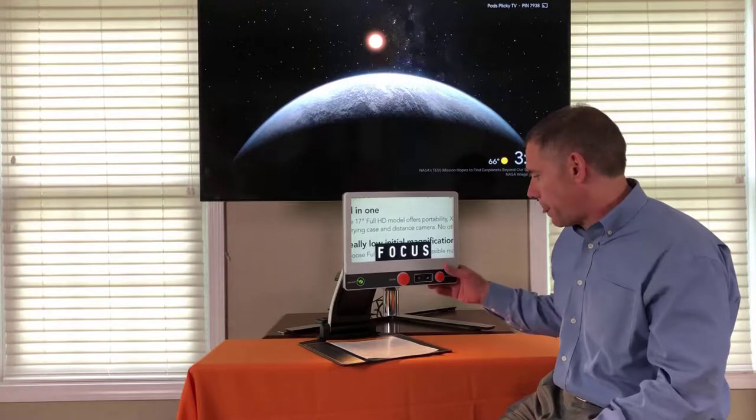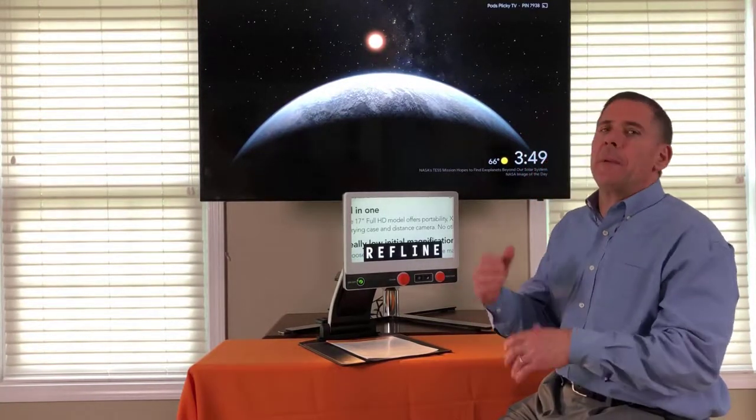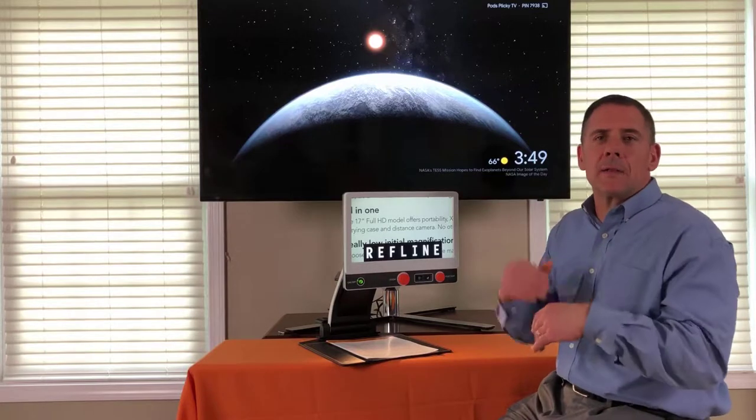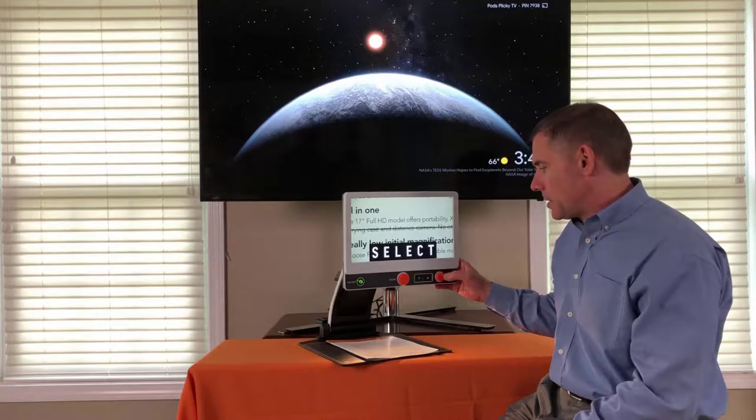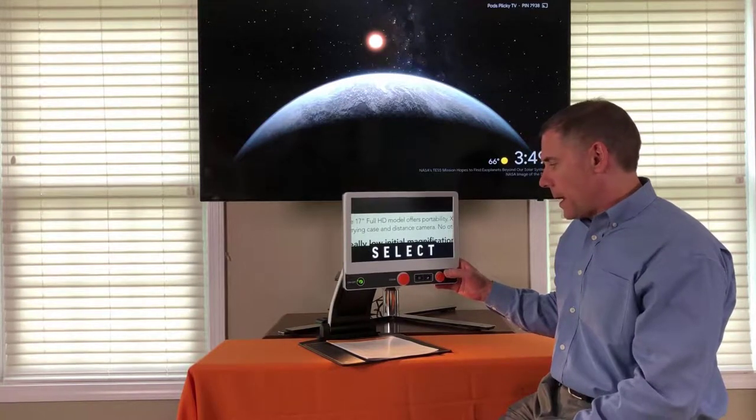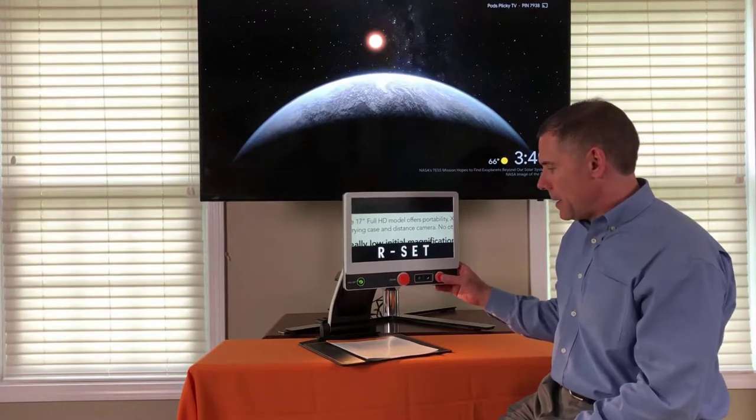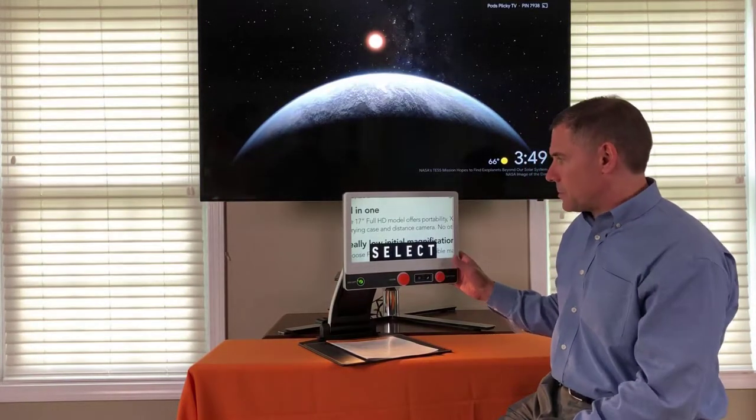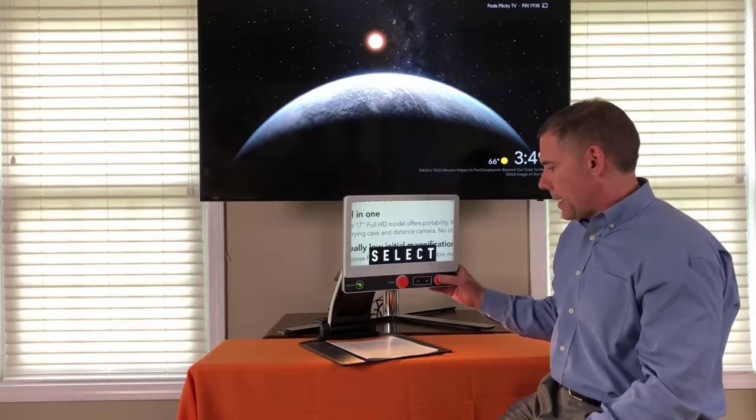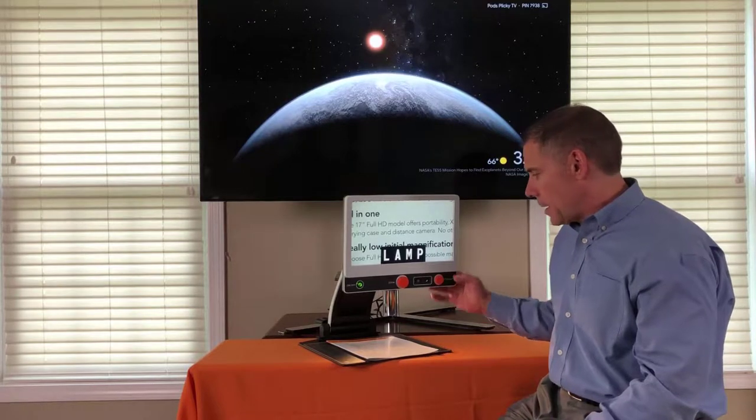My next function is reference line. That's basically vertical horizontal lines and mask. To activate it, I push it in and then I select the one I want to work with. Then I press in again and now I can adjust it. To get rid of it, I just wipe it off the screen and I'm good to go.